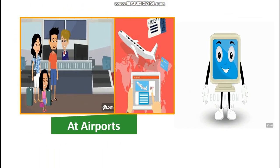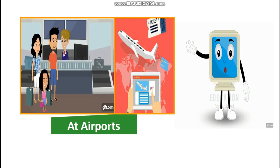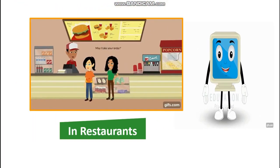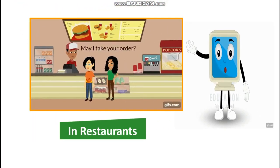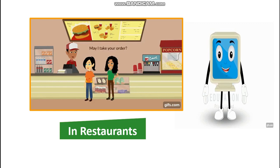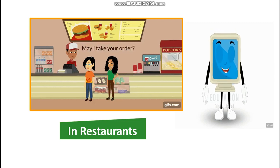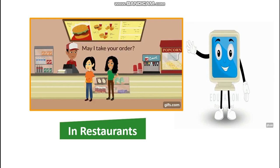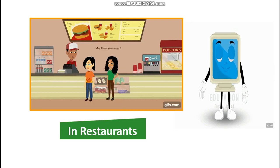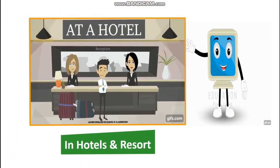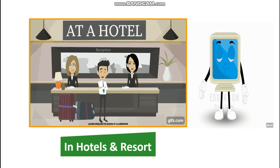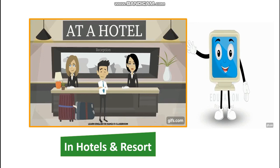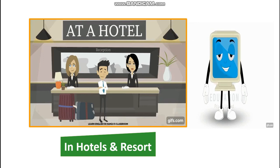At airports, for booking tickets and getting flight details, computers are used. In restaurants, to make bills of food items that you have ordered, computers are used. In hotels and resorts, to record guest details, computers are used.